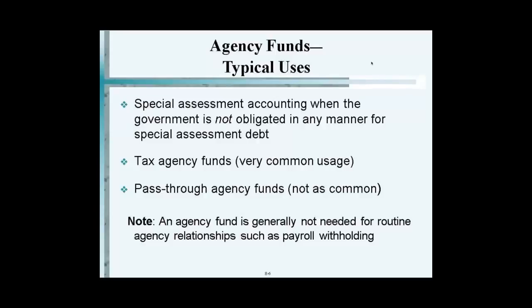GASB says that if you have no involvement in the grant whatsoever, then you can use a pass-through agency fund. But if, as the state, you decide who gets money and who doesn't, or you administer that fund, you can't use agency fund because now you have discretion and that is recognized as revenue.